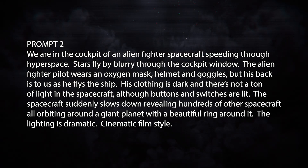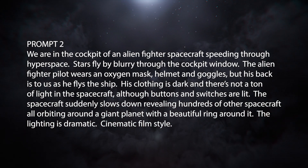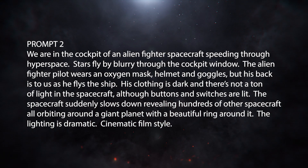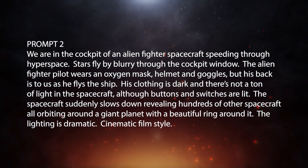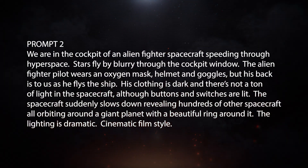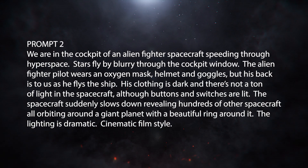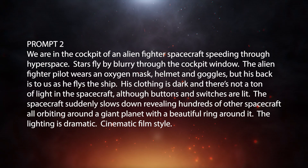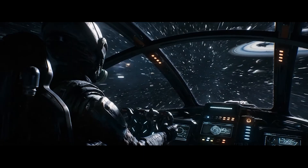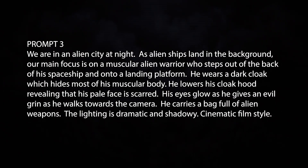Prompt 2: We are in the cockpit of an alien fighter spacecraft speeding through hyperspace — stars fly by blurry through the cockpit window. The alien fighter pilot wears an oxygen mask, helmet, and goggles, but his back is to us as he flies the ship. His clothing is dark and there's not a ton of light in the spacecraft, although buttons and switches are lit. The spacecraft suddenly slows down, revealing hundreds of other spacecraft all orbiting around a giant planet with a beautiful ring around it. Cinematic film style. This one came out pretty well and really matched my prompt — I love the ring around the planet and all of the alien ships.